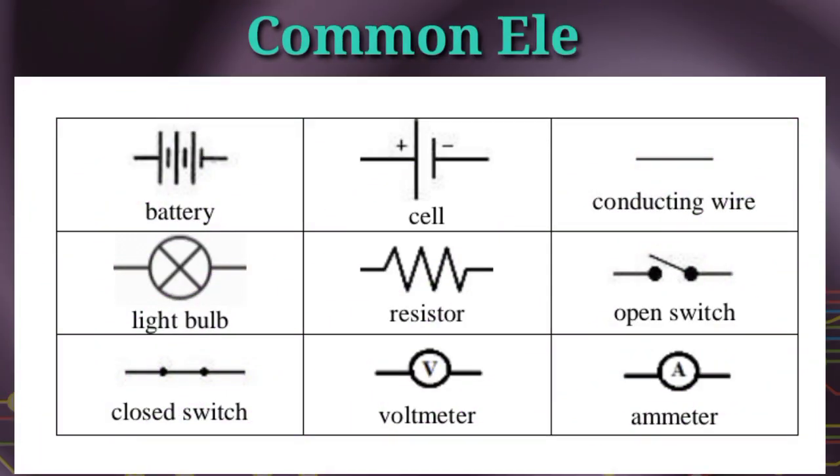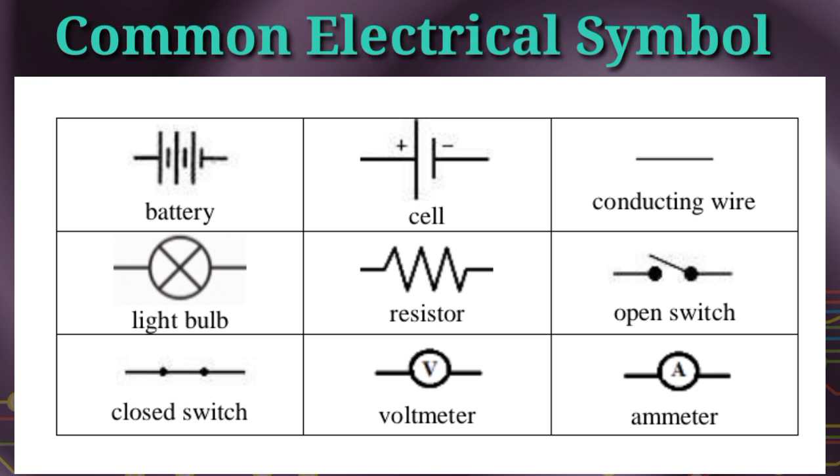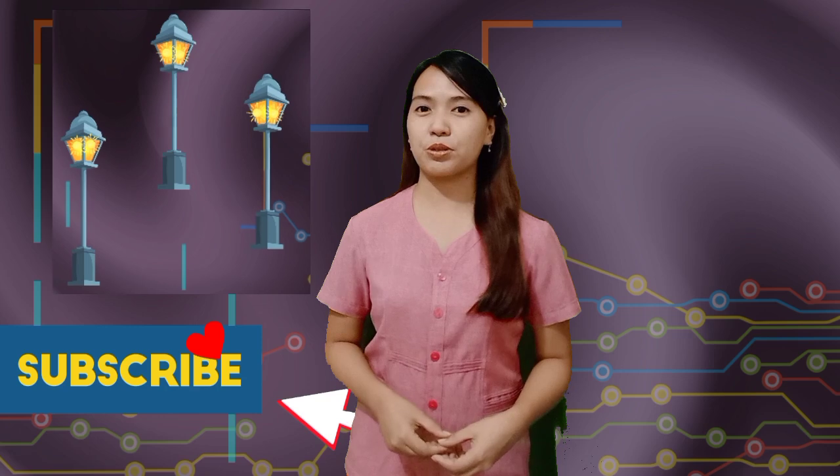I have here common electrical symbols used at home to represent electric circuits. Familiarize yourself with the different electrical symbols. We have battery, cell, conducting wire, closed switch, light bulb, resistor, open switch, voltmeter, and ammeter. I have here examples of pictures on how electric circuits work.